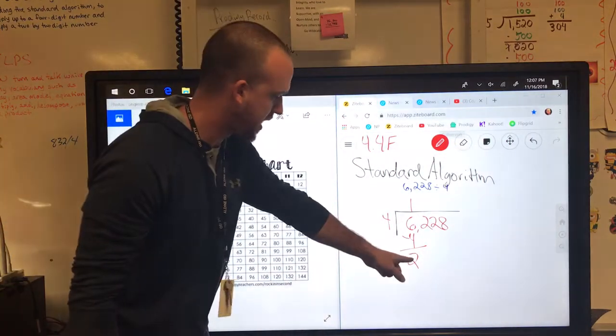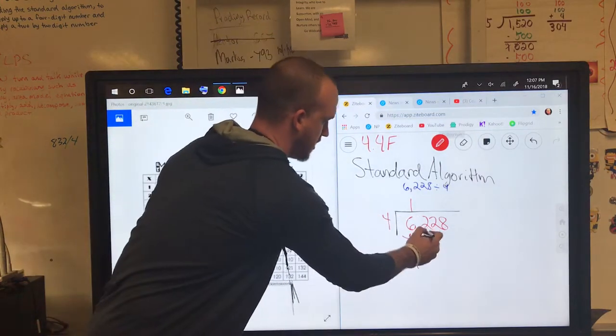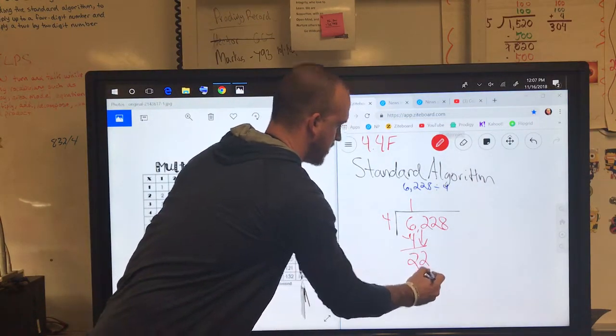Now in the windowpane method, I would bring that number up to the next box. In long division, you bring it down. Now this is 22.